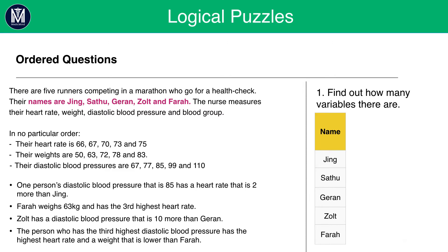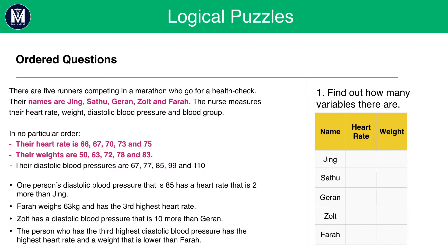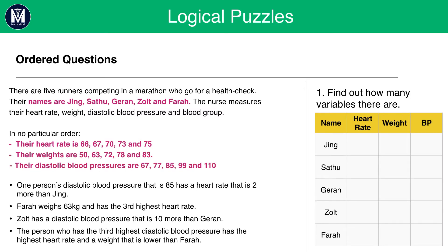In the first column we've put the names. We're also told that we are given information about heart rate, weight, diastolic blood pressure and blood group. However, with blood group there is not any follow-up information. So let's just take the information where it says in no particular order. We know that there's heart rate, so we put that next. We know that there's weight, so we put that next. And then we put diastolic blood pressure to give us this table.